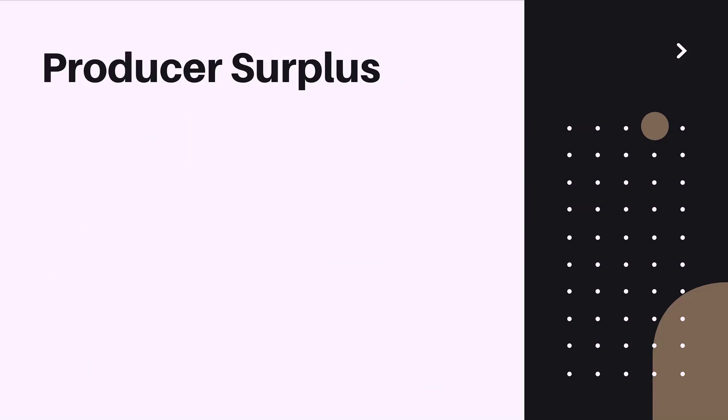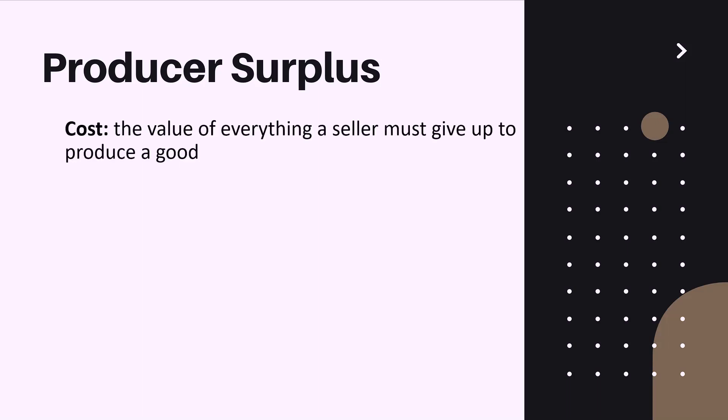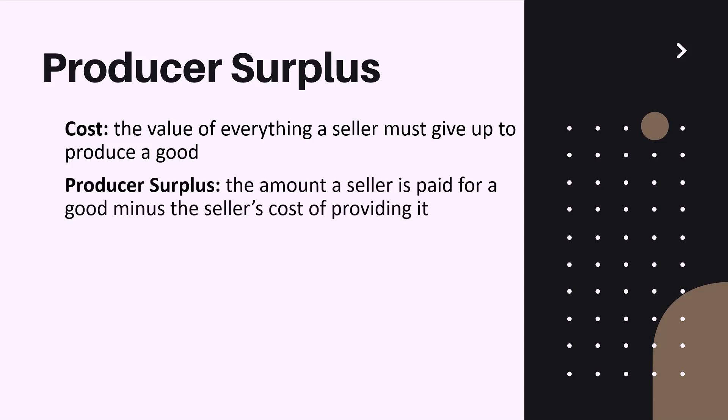The next principle is producer surplus. Just as consumer surplus depended on willingness to pay, producer surplus depends on cost — the value of everything a seller must give up to produce a good. Consequently, producer surplus is the amount a seller is paid for a good minus the seller's cost of providing it.